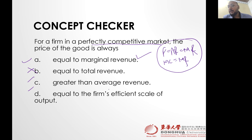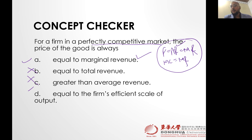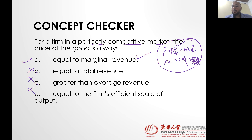Greater than the average revenue? No — it is equal to the average revenue here, so C cannot be the answer. D: equal to the firm's efficient scale of output — we don't see any Q here, do we? No. So only A is the option.